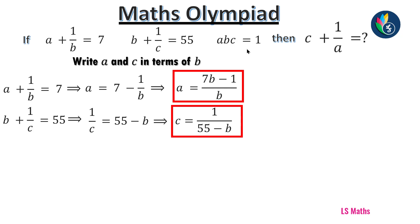Next, what is given? ABC equals 1. So I write given ABC equals 1. Now I substitute these values here. For A, 7B minus 1 by B, into B as it is, and for C, I put 1 by 55 minus B equals 1. Here B and B get cancelled. So in the numerator we have 7B minus 1, and in the denominator we have 55 minus B. We can write this as 7B minus 1 by 55 minus B equals 1.